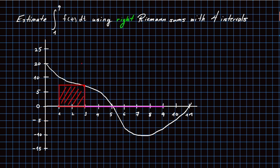The contribution from the first rectangle is 7.5 times 2. For the next interval, 3 to 5, the right-hand endpoint value is 0, so there's no contribution: 0 times 2 equals 0. For the interval 5 to 7, the right-hand endpoint value is minus 10 — it's below the axis, so we count it negatively. That gives minus 10 times 2, which is minus 20.